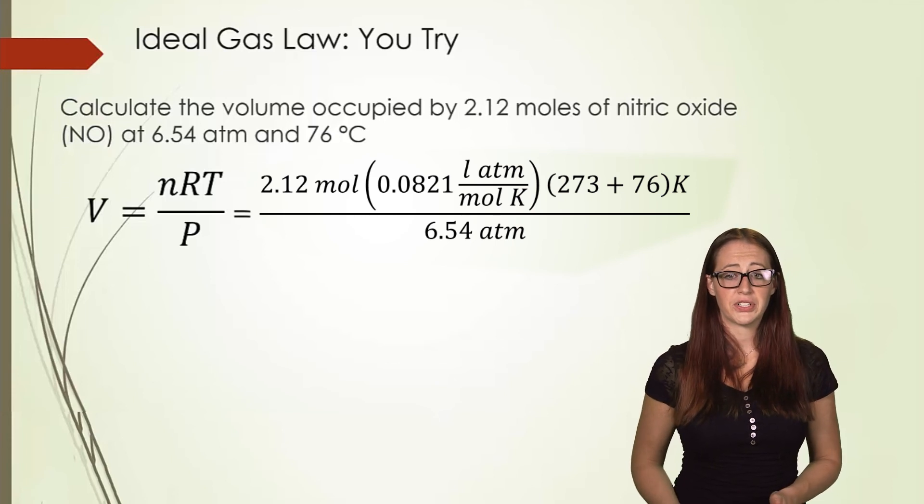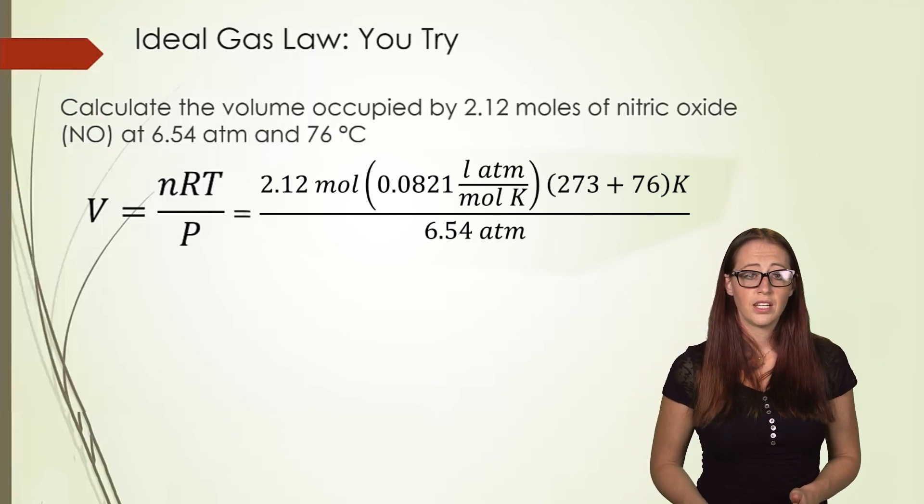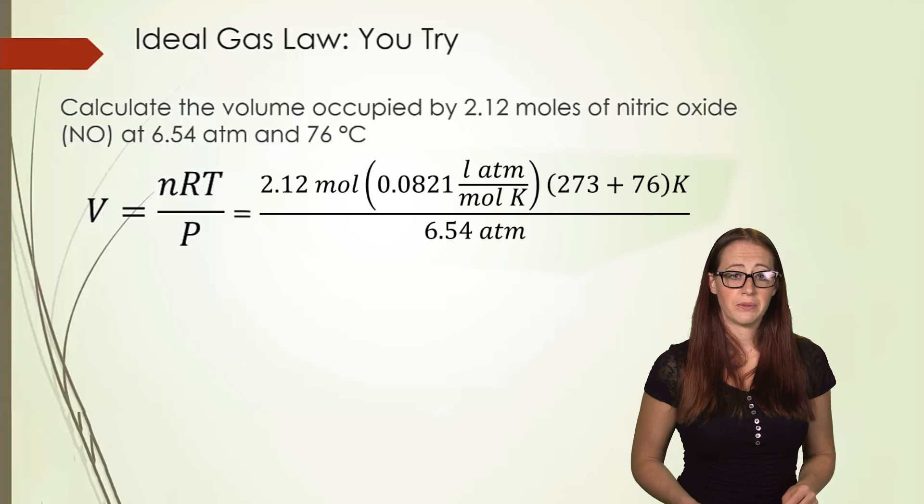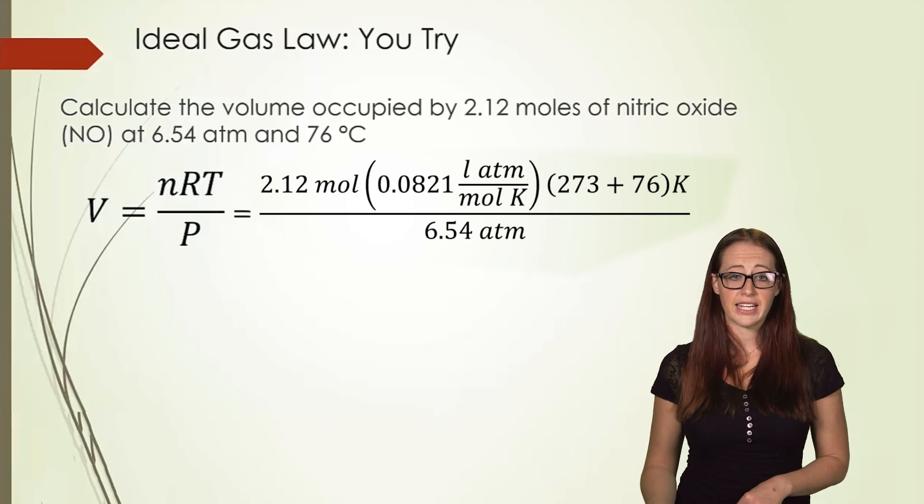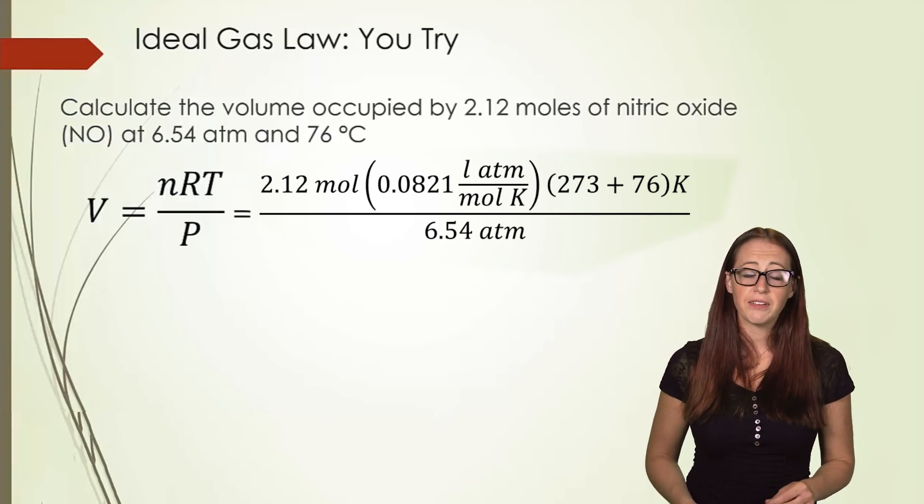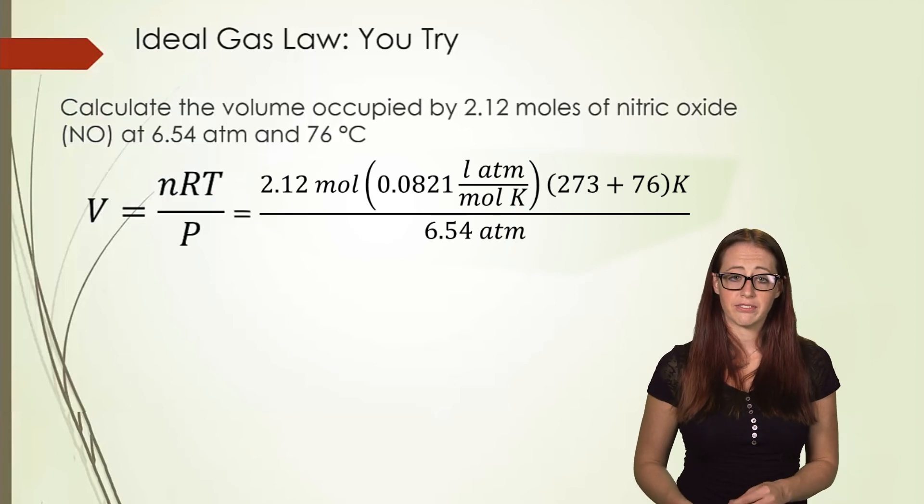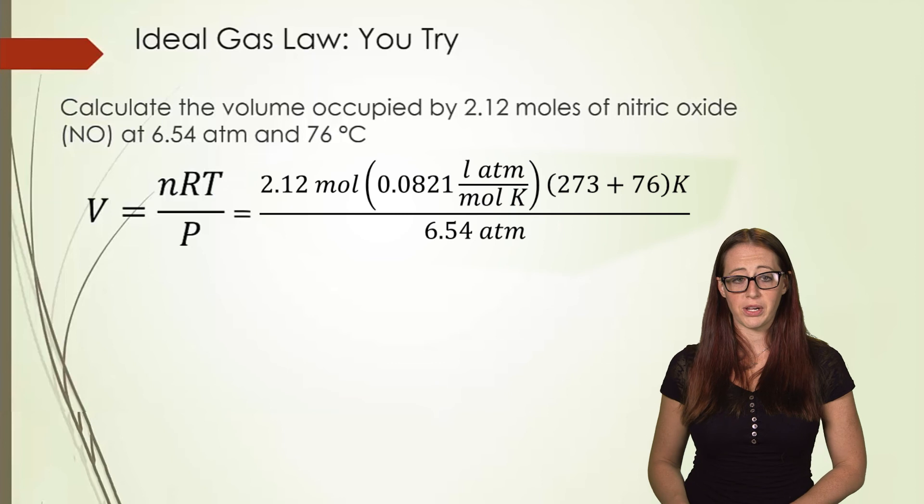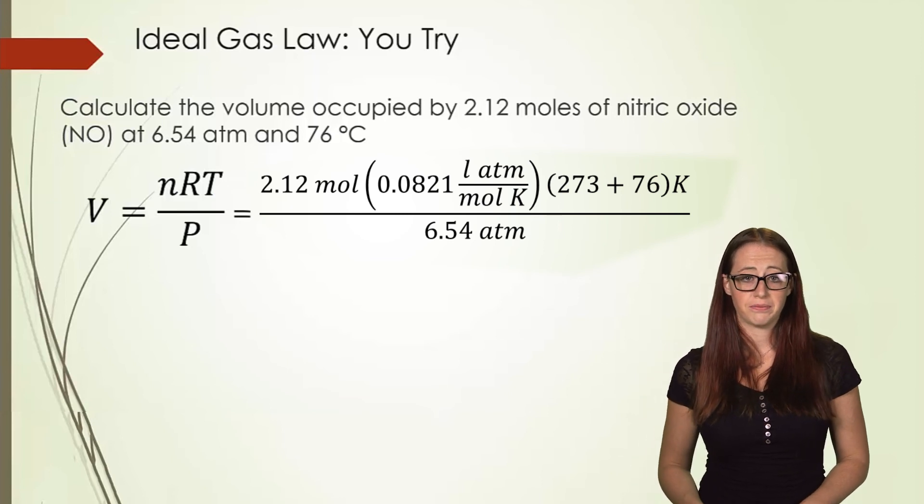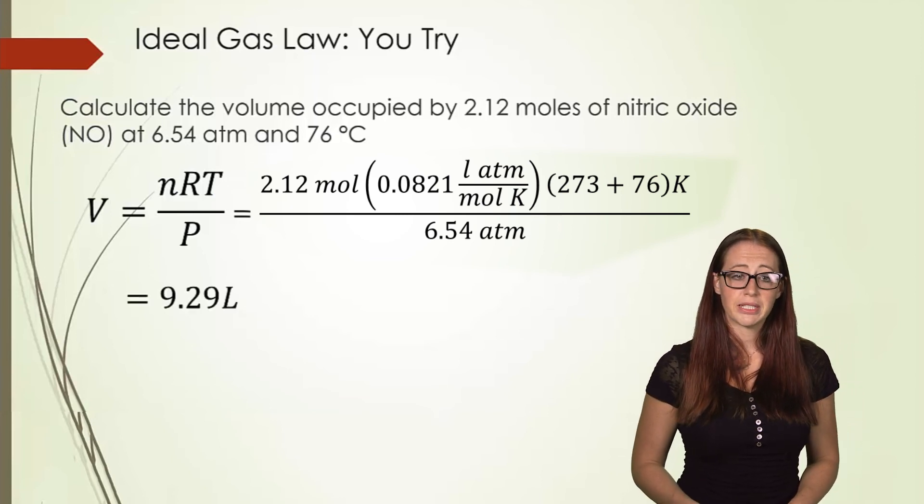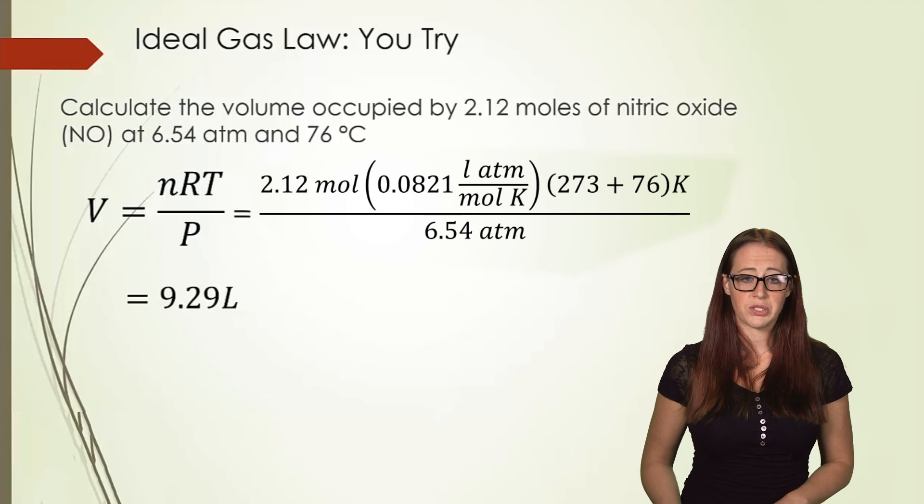But once again, for temperature, you're going to have to convert. We fill our 2.12 value in. We fill in our ideal gas constant. We fill in our temperature while adding it to 273 to do the conversion. And we divide by the 6.54 pressure. From here, we get our answer, which is 9.29 liters.